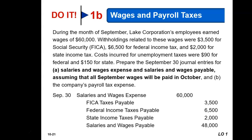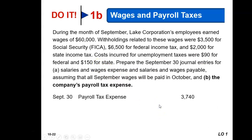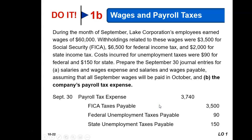The next entry is to recognize and record the taxes owed by the employer at the end of the pay period. The employer must match the FICA taxes withheld from employees' earnings and also pay federal and state unemployment taxes. Costs incurred for unemployment taxes were $90 for federal and $150 for state. You debit payroll tax expense for the total amount owed by the employer — $3,740 — and since the taxes have not yet been paid, you recognize liability accounts such as FICA tax payable, federal unemployment tax payable, and state unemployment tax payable. These two journal entries record all payroll transactions at the end of the pay period.